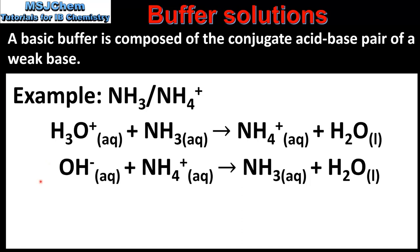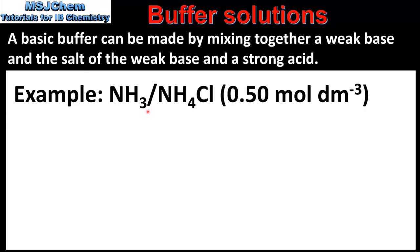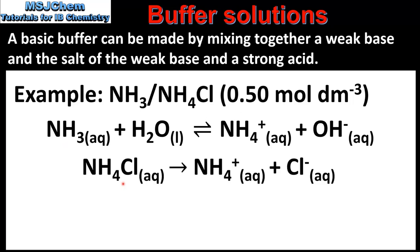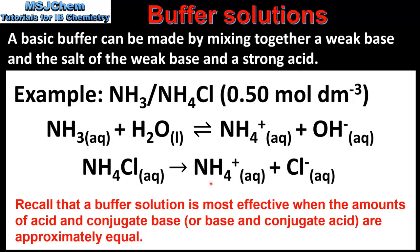A basic buffer can be made by mixing together a weak base and the salt of the weak base and a strong acid. An example is the weak base ammonia and the salt ammonium chloride. Because ammonia is a weak base, the equilibrium position lies to the left. Ammonium chloride fully dissociates to produce ammonium ions and chloride ions. The resulting solution contains equal amounts of the weak base ammonia and its conjugate acid the ammonium ion, therefore acting as a buffer solution.